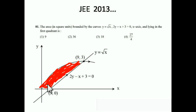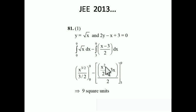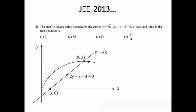This is the area we are going to find. Between x = 0 and x = 3, the area is under the parabola. Between x = 3 and the intersection point (x = 9), the area is between the parabola and the line. You can also try another method: integrate from 0 to 9 under the parabola.